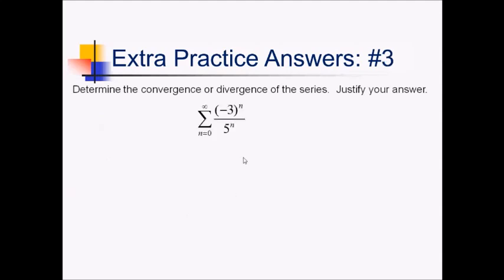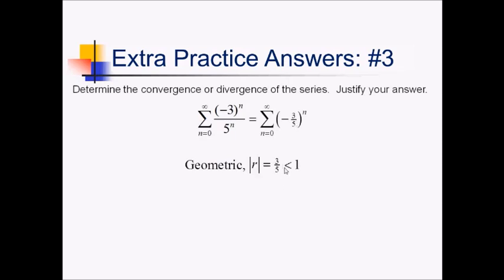On this problem, I notice that I have two terms both being raised to the nth power. So I'm going to immediately rewrite this as a single exponent: (-3/5)^n. At this point I notice this is a geometric series, and we have an absolute value of our common ratio of positive 3/5. Since that is less than 1, this converges by the geometric series test.